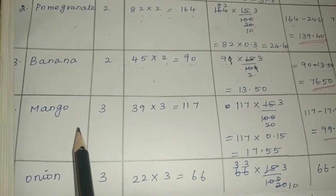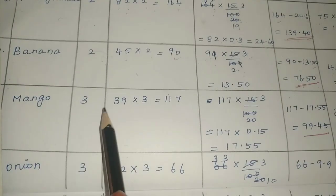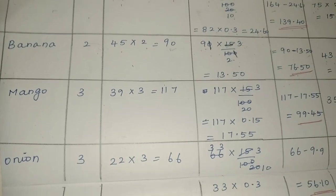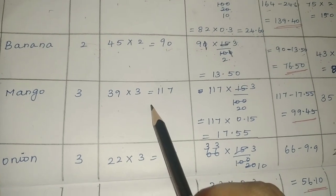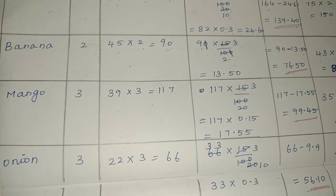Next, mango — 3 kg. Per kg is ₹39, so 3 kg is 39 into 3 equals ₹117.